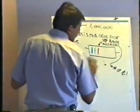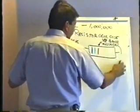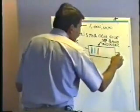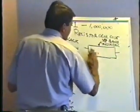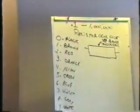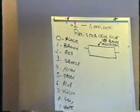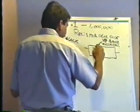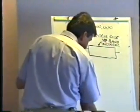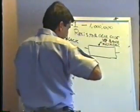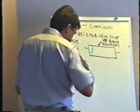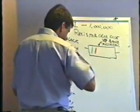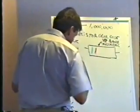We're going to go through a bunch of these things and then do a little resistor lab in just a second so we'll have a good idea of how this works, because it's real important to know the color code. Let's say we have a resistor that is green, red, orange.